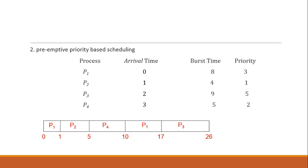At time 5, all remaining processes are in the ready queue: P1 (partially executed, 1 unit done, 7 units remaining), P3, and P4. We pick the highest priority process. Since P2 is completed, the next highest priority is P4. We execute P4 starting at 5, requiring 5 units, completing at 10. Next, P1 has the next highest priority with 7 units remaining, starting at 10 and completing at 17.